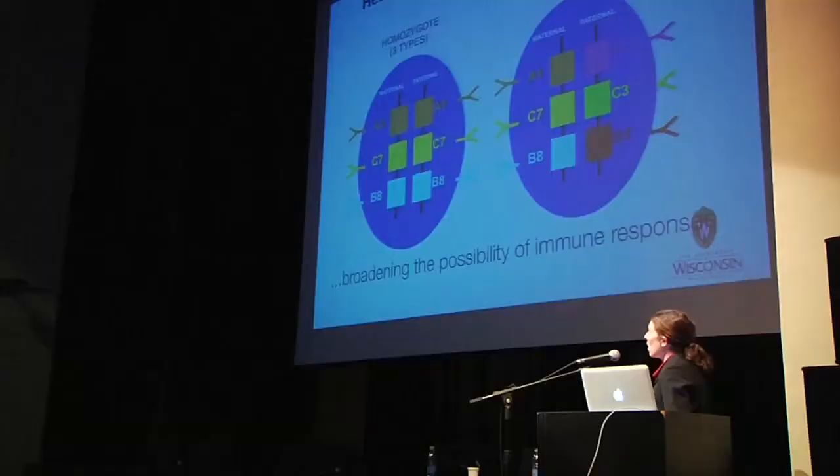Heterozygosity at the HLA increases the number of alleles you have. A homozygous individual could have three different HLA genes and present three different sets of peptides to T cells, whereas a heterozygous individual would have six different genes and present six different sets of peptides. Simply by being heterozygous throughout the HLA, one broadens the possibility of immune responses that could be elicited in an individual.